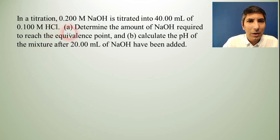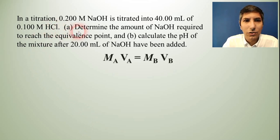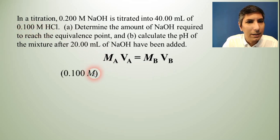So to solve part A, we need to use the titration equation, MAVA equals MBVB and just plug and chug into this. So the molarity of the acid is given to us in the problem. It's 0.100 molar. So I'm going to plug that in there. The volume of the acid, it says we're titrating into 40 milliliters of this acid. So 40 milliliters is our V sub A.